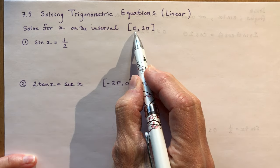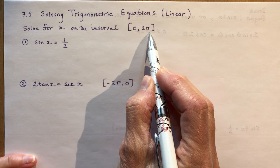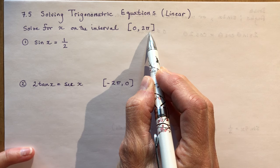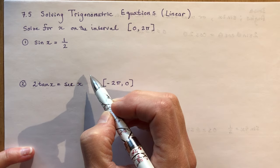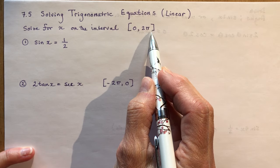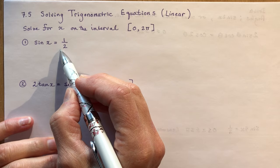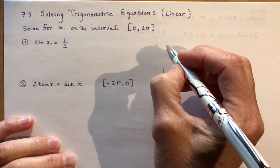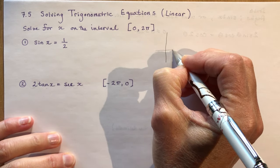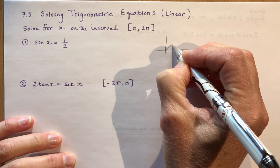Now you will always be given an interval because, as you know, sinusoidal functions continue on and on forever and ever so you would have an infinite number of solutions without a domain restriction. Where is sin x equal to 1 half? This should be second nature to you now, like breathing out and breathing in.